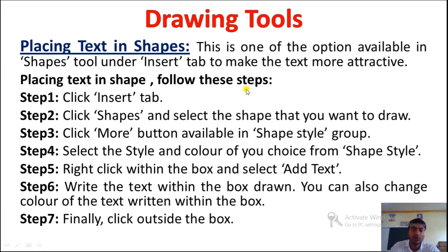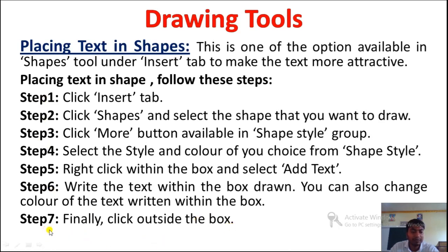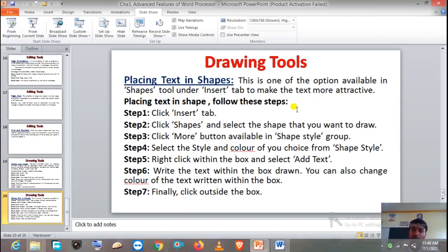Placing text in a shape — follow these steps. Step one: click the Insert tab. Step two: click Shapes and select the shape that you want to draw. Step three: click the More button available in the Shape Style group. Step four: select the style and color of your choice from Shape Style. Step five: right-click within the box and select Add Text. Step six: write the text within the box drawn. You can also change the color of the text written within the box. Step seven: finally click outside the box.